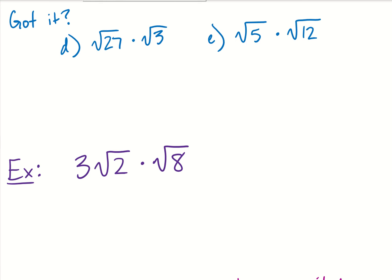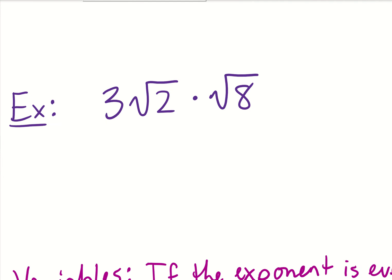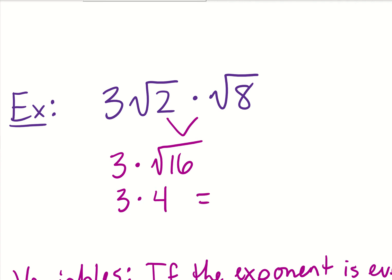I've got just one more example here — there isn't a got-it problem to go with it, but it's pretty similar to what we just did. I'm going to do 3 times the square root of 2 times the square root of 8. I'm going to leave the 3 off to the side for now. Two times 8 is 16 under the radical, and the square root of 16 is 4, which means I now have 3 times 4, which equals 12. Really it's the same thing — just treat the outside number separately, get the radicals under one radical, then solve from there.